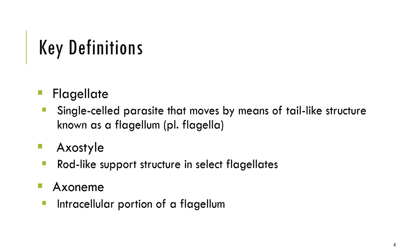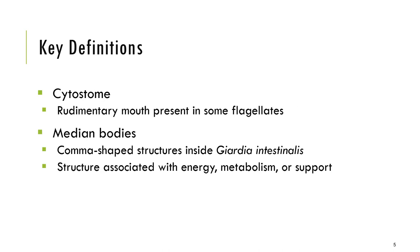We also have axostyle, which can be seen in selected flagellates. An example of a flagellated protozoan with axostyle is Trichomonas. The axostyle is a rod-like structure that supports the body of our flagellates. We also have what we call axoneme, which is the intracellular portion of the flagellate. Cytostome is a rudimentary mouth opening in some flagellates.